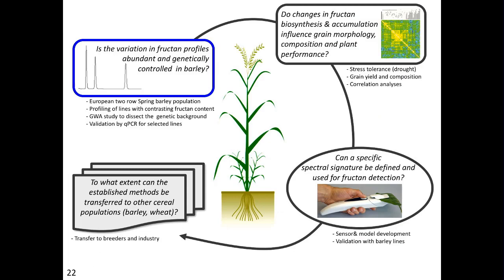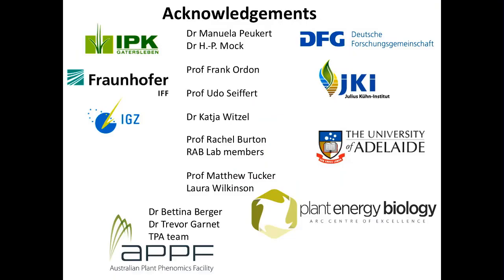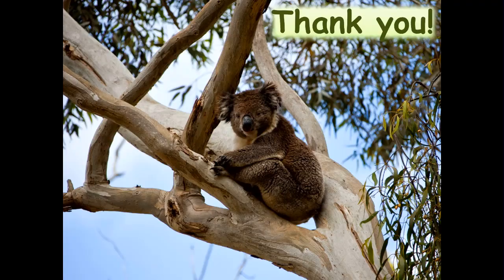In summary, we have shown variability of fructan profiles, which will be used to dissect the genetic background and correlate with seed phenotypic traits. We are in the process of developing a sensor to transfer this to industry. I thank the colleagues previously and currently involved, and particularly the funding agency, the German Research Foundation. Thank you for your attention.